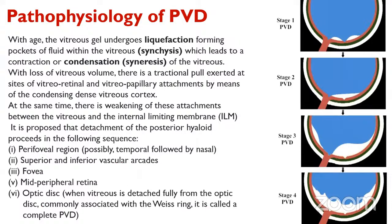The pathophysiology of PVD: with age there is liquefaction (synchisis) leading to contraction or condensation (syneresis) of the vitreous, with weakening of the attachments between the vitreous and the ILM. PVD occurs first in the perifoveal region (stage 1), starting at the temporal perifoveal region, then nasal, then superior and inferior circuits, then the fovea, mid-peripheral retina, and finally the optic disc. When vitreous is fully detached from the optic disc, we see a Weiss ring — this is called complete PVD.